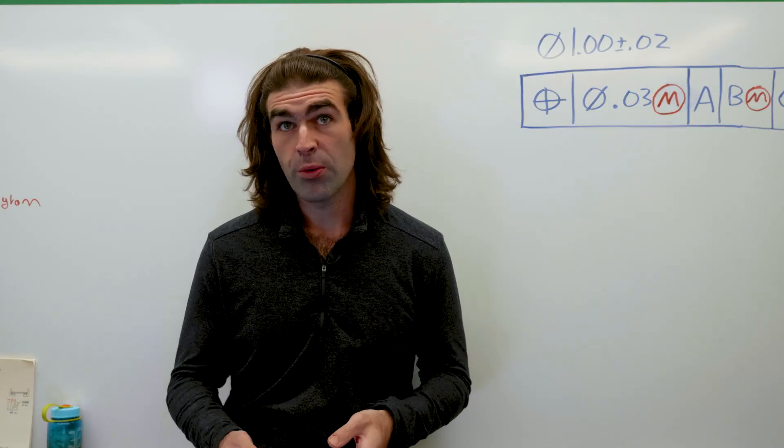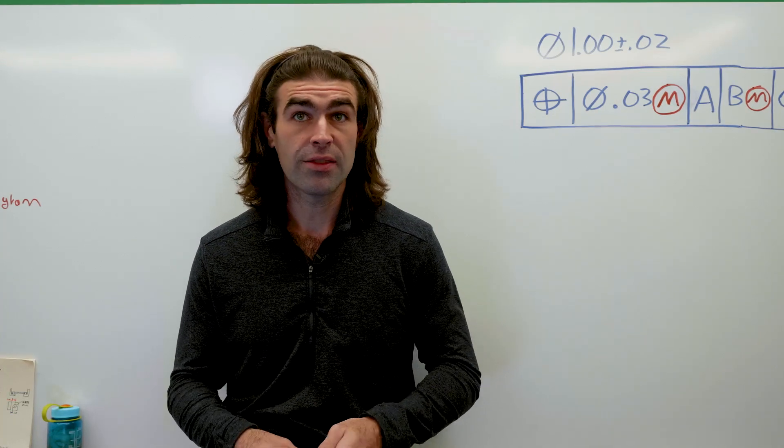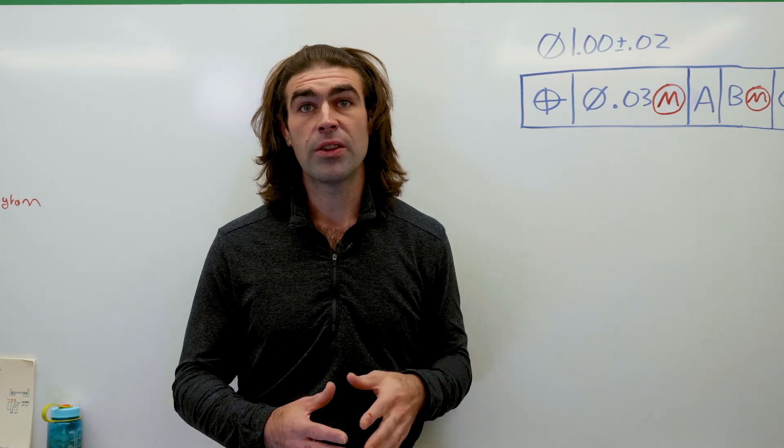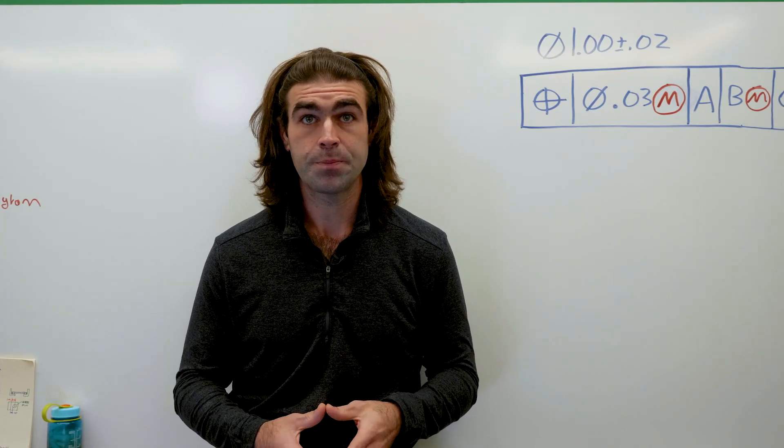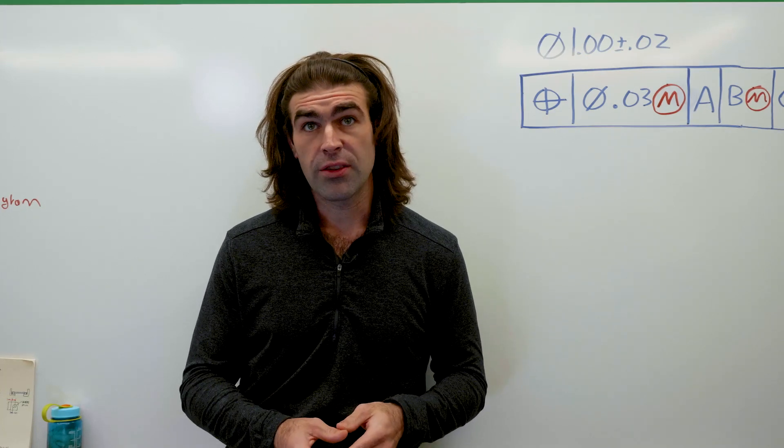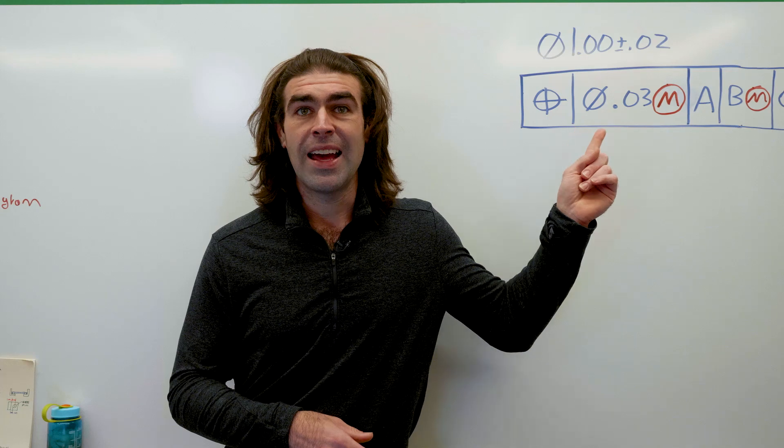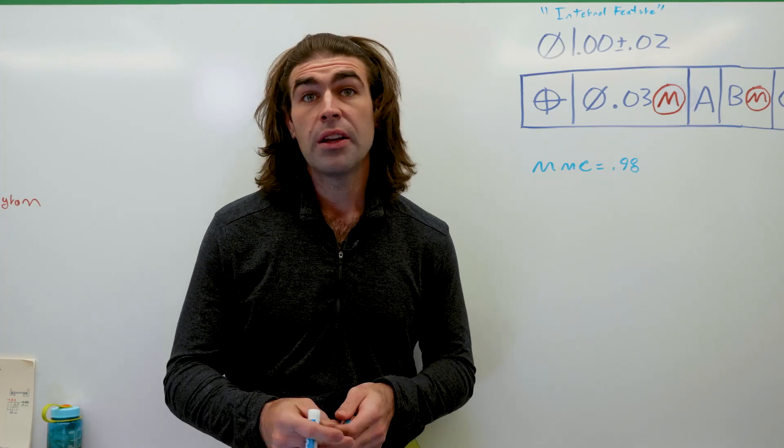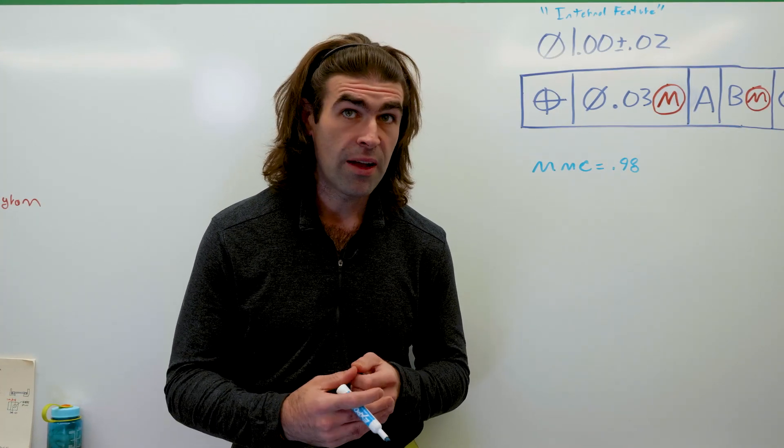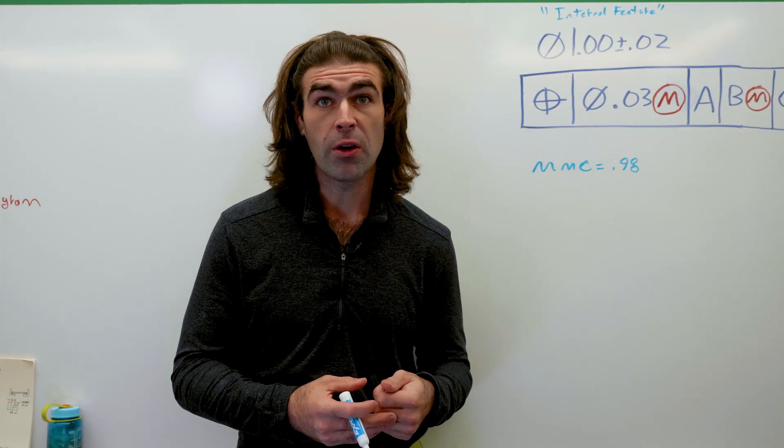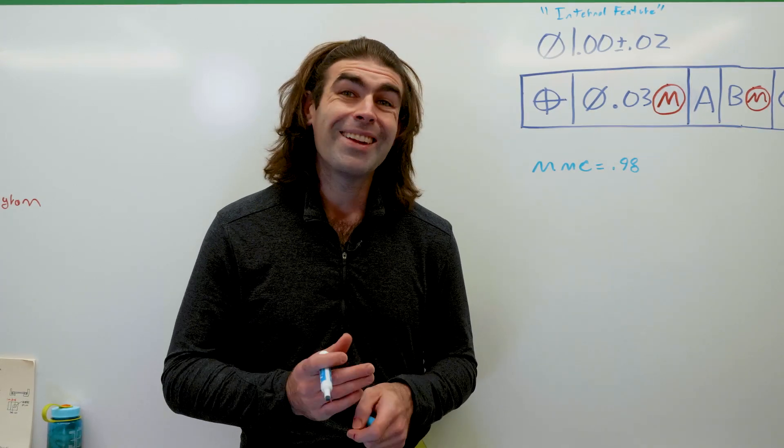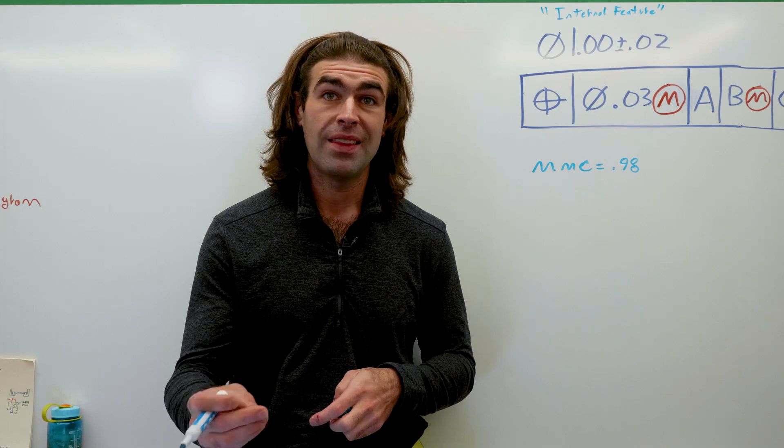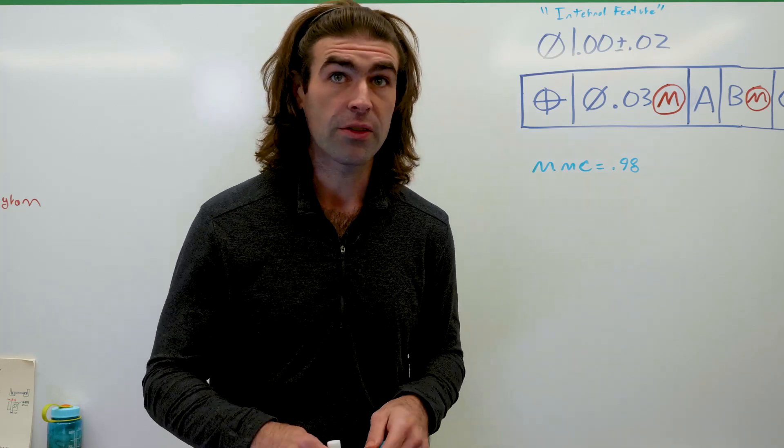Now that's not what's on the board. What's on the board is MMC. Now the way I read this, when you see MMC, the stated tolerance only applies at MMC. So if this is an internal feature, say it's a hole, the MMC is 0.98. At that point, you have 0.030 of positional tolerance. Now you might ask, what if the hole comes in at some other size, which it probably will, you get more tolerance equal to the difference between the MMC and the actual size.